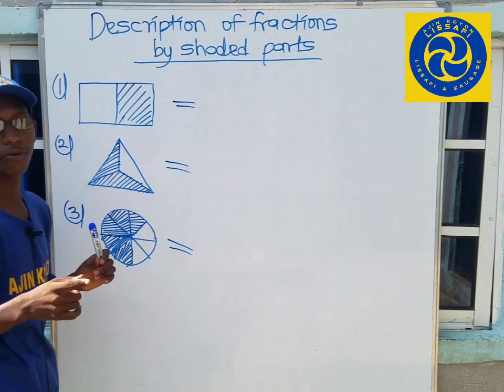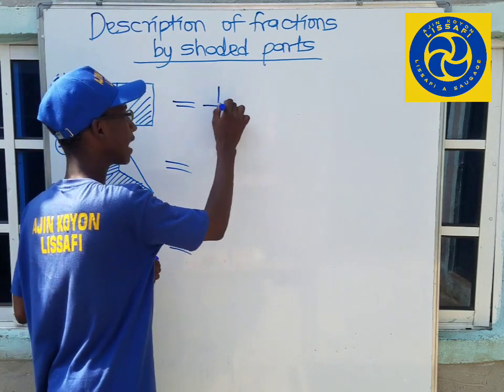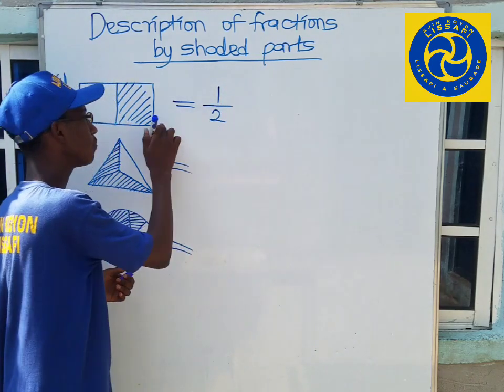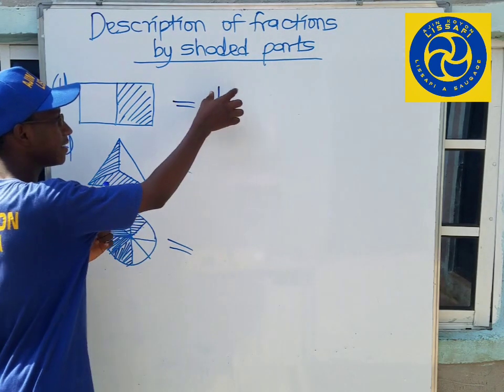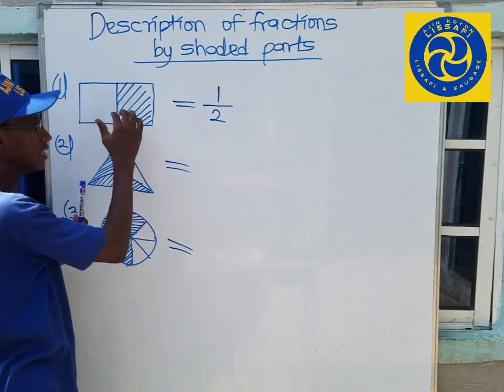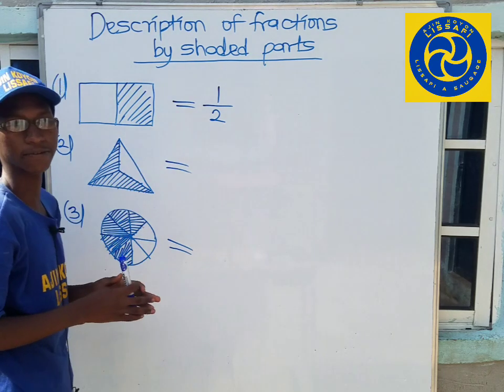To understand the parts, if I shade one out of two, that means there are two parts total. So I shade one part out of two parts. When I shade it, it becomes a fraction.